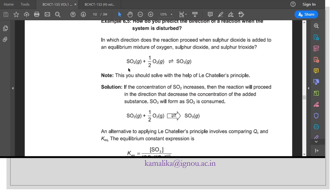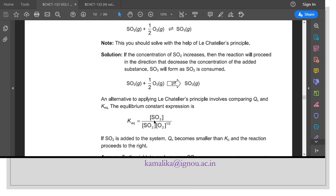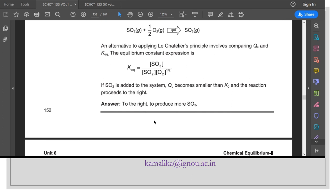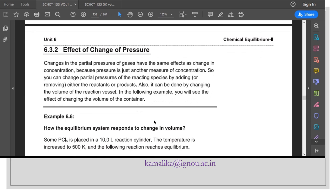If the concentration of SO2 is increased in the sulfur trioxide formation reaction, the reaction will proceed in the direction that decreases the concentration of the added substance. Sulfur trioxide will form as SO2 is consumed. This you can see with the application of Le Chatelier's principle.